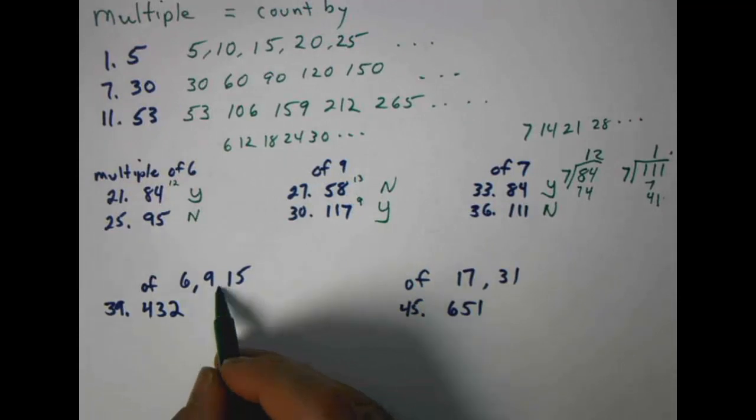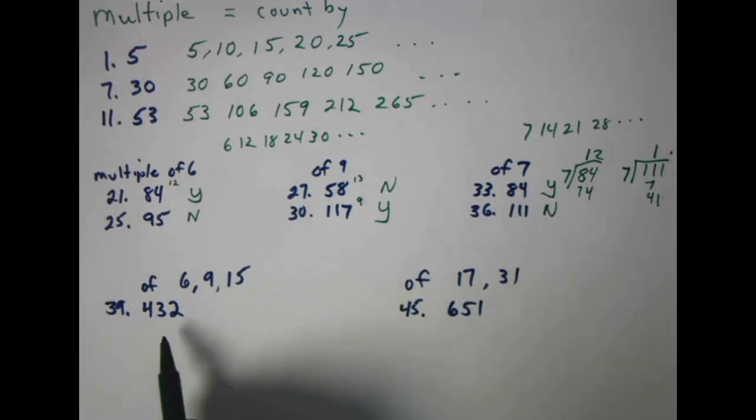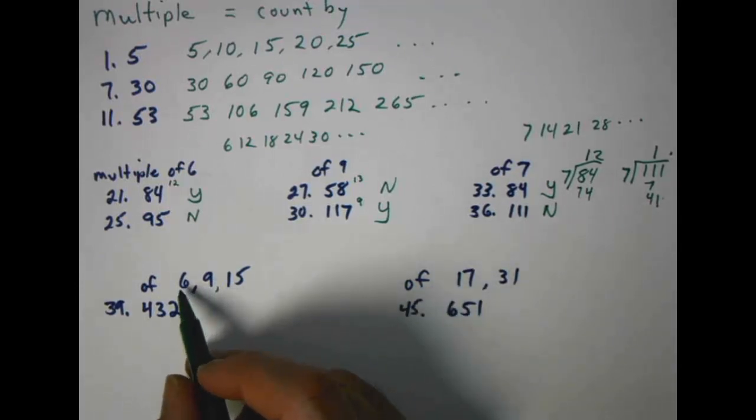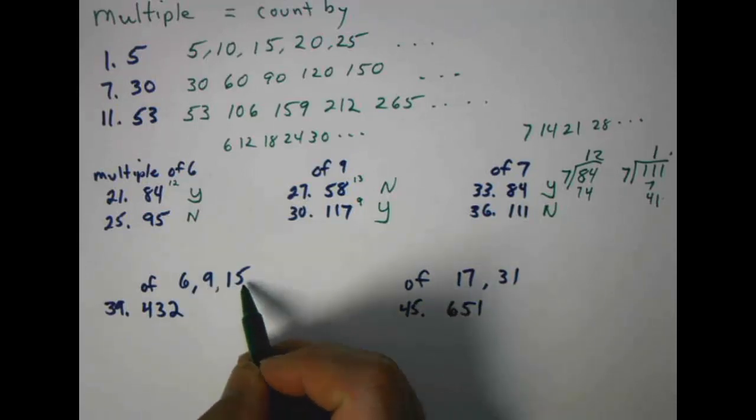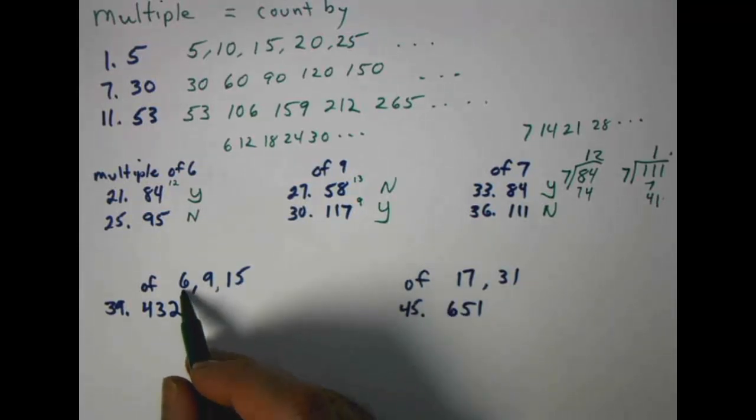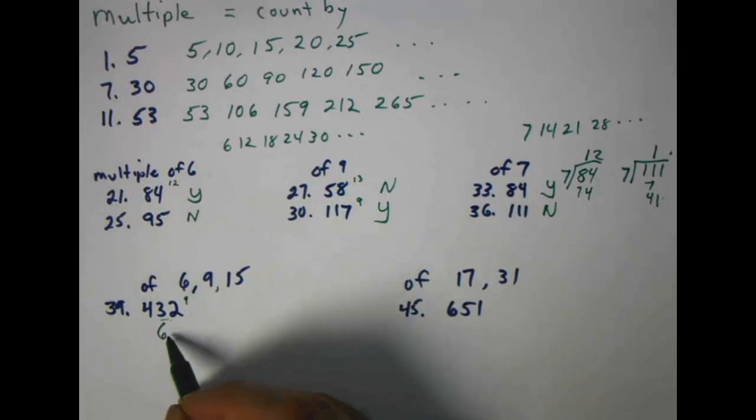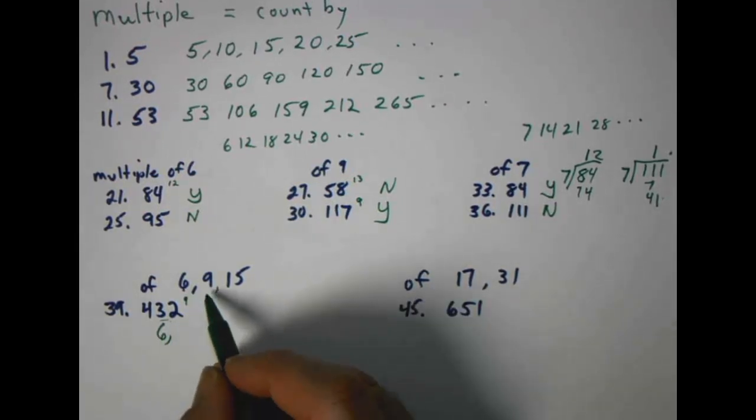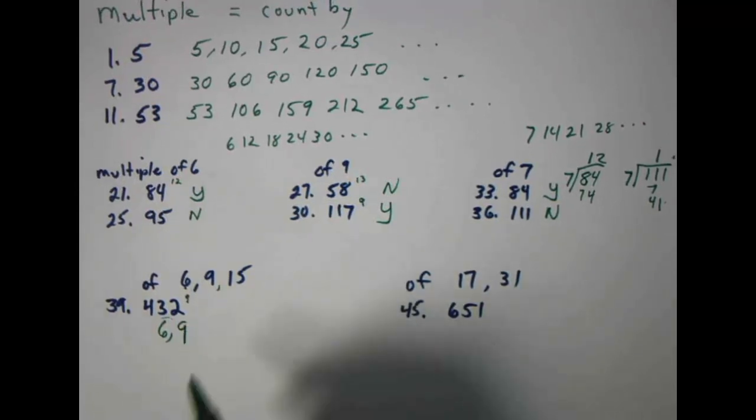Then they're going to start throwing some curves at you a little bit. With problem number thirty-nine, they're going to use bigger numbers. But the rules don't change here. They're going to ask you, is four hundred and thirty-two a multiple of six? Then nine and then fifteen. So let's take them one at a time. In order to be a multiple of six, it had to meet the rules, divisibility rules for two and three. Is it even? Yes. Sum of the digits? Nine. Three goes into nine, therefore six goes in. So sum of the digits was nine. Nine will go into nine, therefore nine goes in.